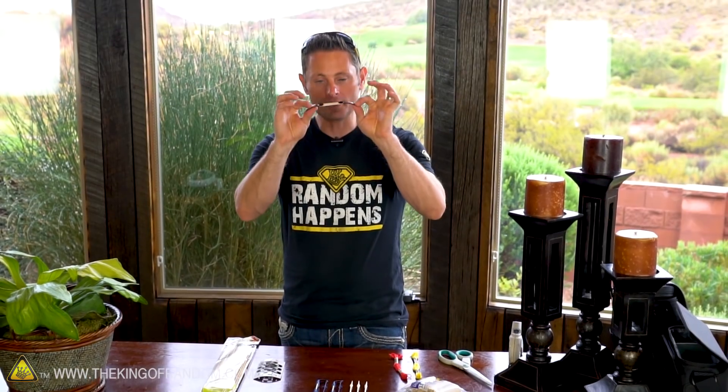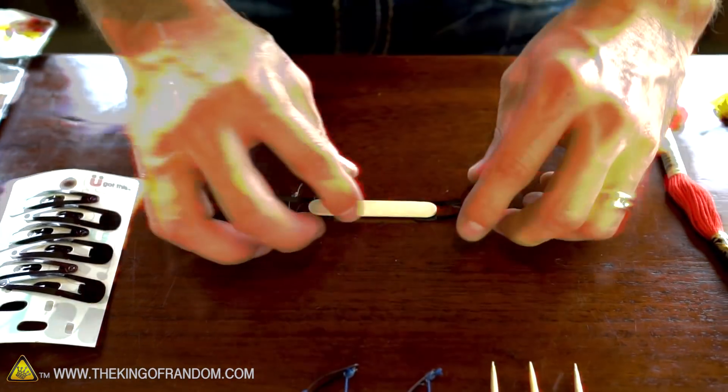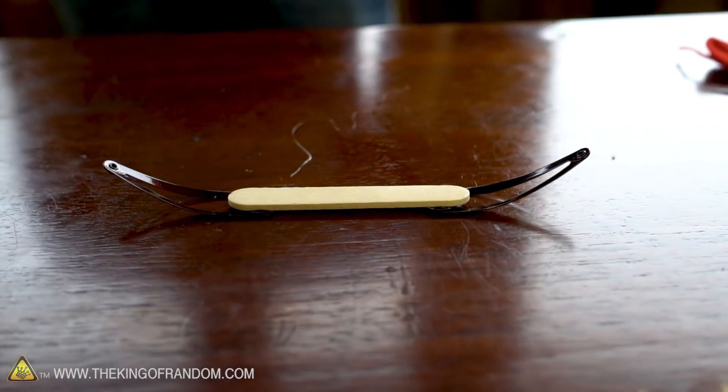Now while the glue is still hot, it's a good idea to set it face down on the table and make sure that the hair clips are straight. Then just give it about 20 to 30 seconds to cool completely.